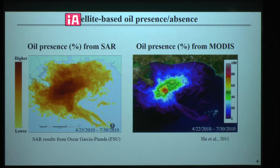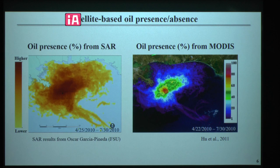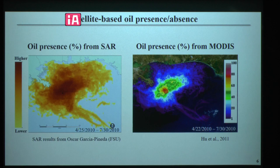The most frequently used satellite techniques are synthetic aperture radar (SAR) and optical remote sensing. This slide shows the oil presence/absence statistics from the Deepwater Horizon oil spill by SAR and by MODIS. The derived oil footprint and oil frequency distribution patterns are revealed by these two techniques. Both SAR and optical remote sensing are very good at obtaining these oil presence/absence statistics.